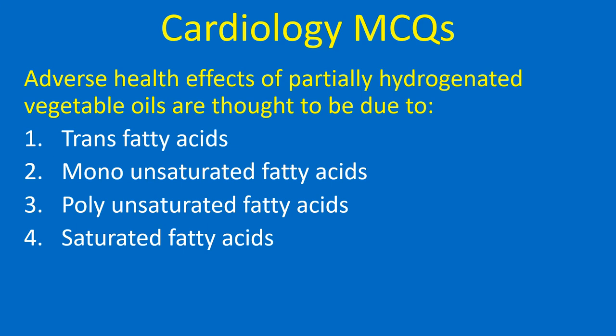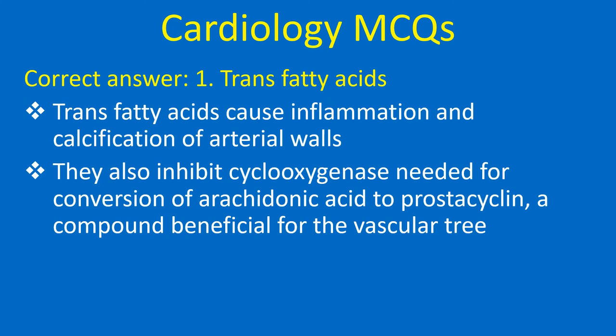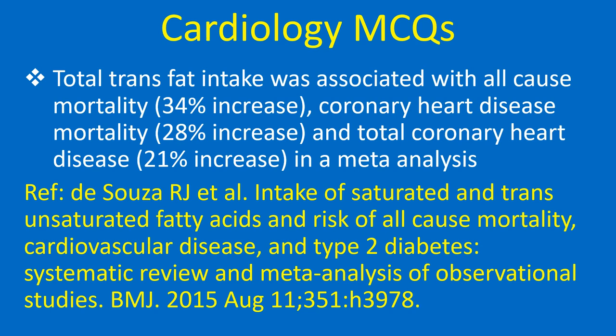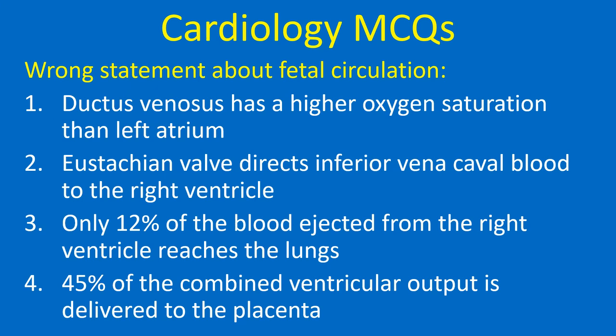Adverse health effects of partially hydrogenated vegetable oils are thought to be due to: 1. Trans fatty acids, 2. Monounsaturated fatty acids, 3. Polyunsaturated fatty acids, 4. Saturated fatty acids. Correct answer: 1. Trans fatty acids. Trans fatty acids cause inflammation and calcification of arterial walls. They also inhibit cyclooxygenase needed for conversion of arachidonic acid to prostacyclin, a compound beneficial for the vascular tree. Total trans fat intake was associated with all-cause mortality, coronary heart disease mortality, and total coronary heart disease in a meta-analysis.